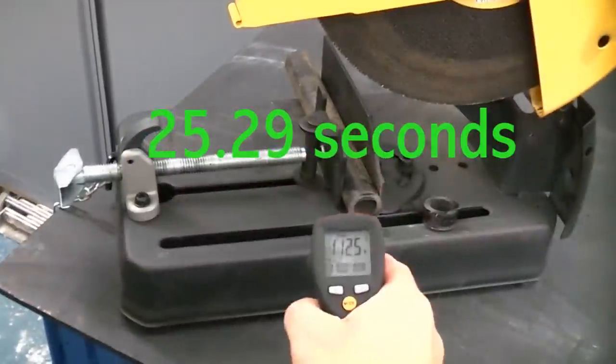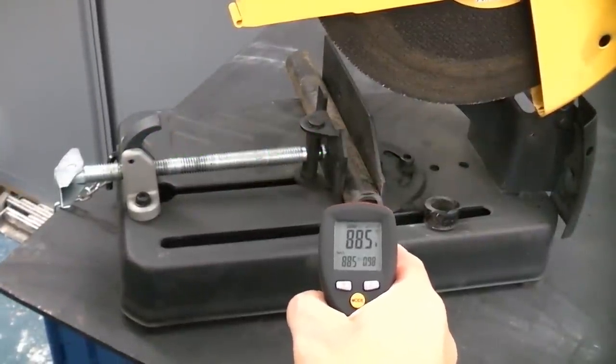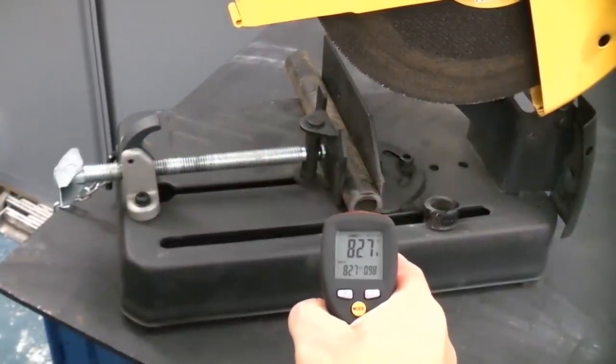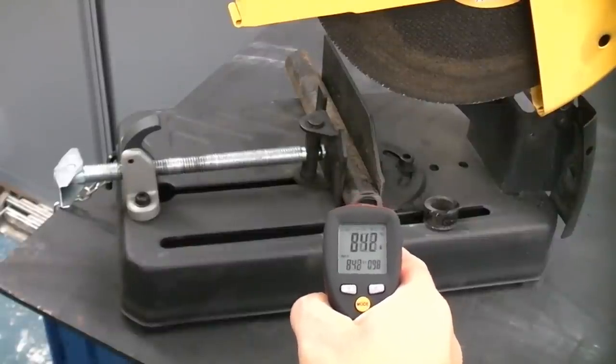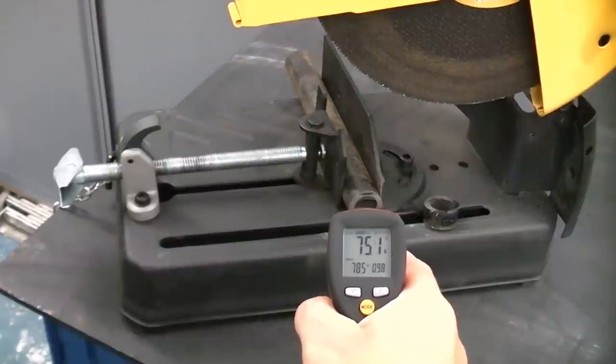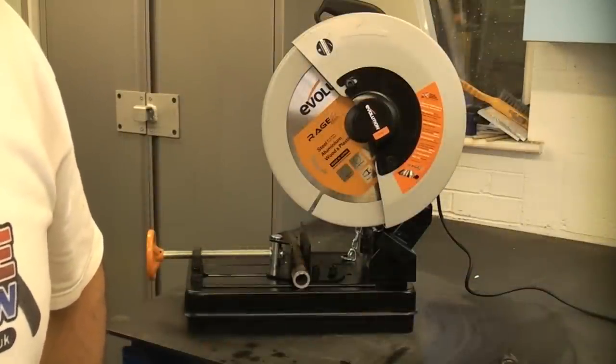And if we just check the temperature of that pipe where it's been cut, you can see that it is extremely hot. That's 88 degrees, 82 degrees it's now cooling down. But you can see that that piece of metal is extremely hot. I'm now going to do exactly the same test using the Evolution Rage 2.